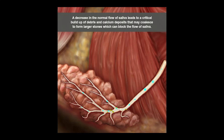At some point in time, the way the stone is formed is these calcium deposits coalesce and find each other. Once they find each other, they form a stone that is large enough to block and obstruct the normal flow of saliva through the duct.